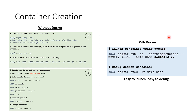Debugging Docker containers is rather simple. The -d flag in the docker run command denotes that the container runs as a daemon. To log into this container, we can simply attach a bash using the docker exec command. Docker containers are pretty easy to launch and very easy to debug.